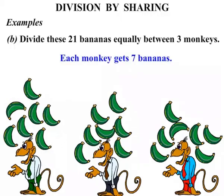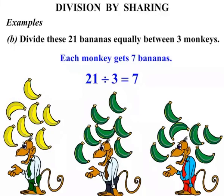So we had 21 bananas. We split it up three ways between three monkeys. So we say that 21 divided by 3, the answer was 7. Excellent. Well that concludes the lesson. But just before we go, let's change those green bananas back to yellow.